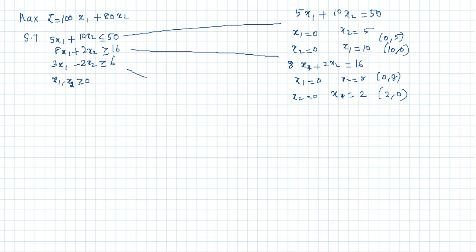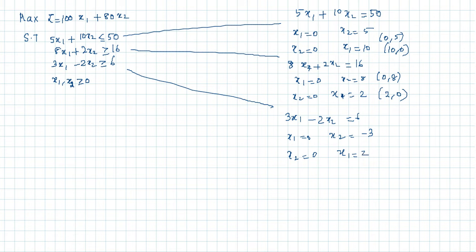Now for the third constraint: 3x1 − 2x2 = 6. On applying x1 = 0 you get x2 = −3, and on applying x2 = 0 you get x1 = 2. So the points are (0, −3) and (2, 0). To summarize, the intercept points are: first constraint (0,5) and (10,0); second constraint (0,8) and (2,0); third constraint (0,−3) and (2,0).